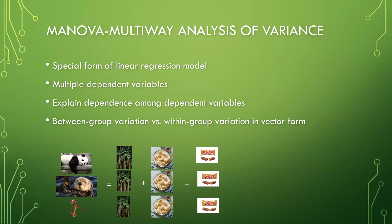Now let's take a look at the MANOVA model. MANOVA stands for multi-way analysis of variance. It is one special form of linear regression model as well. Unlike ANOVA, we can include multiple dependent variables in MANOVA. The strength of MANOVA is that it can explain dependence among multiple dependent variables. When examining between-group and within-group variation in MANOVA, the comparison is in vector form. From the illustration at the bottom, I compare calorie intake among Panda, Otter, and Mushu in one model, and my independent variables — the average calorie of BAMBOO, DUMPLIN, and TWIX — are in vector form.